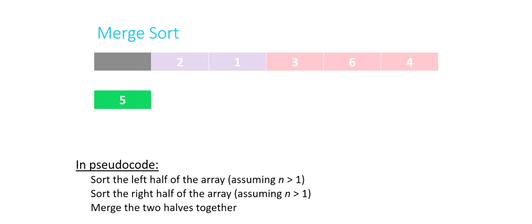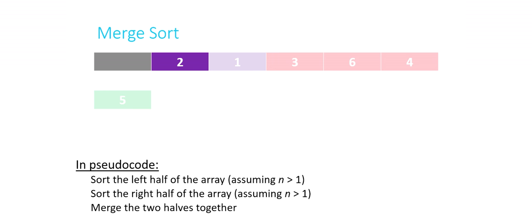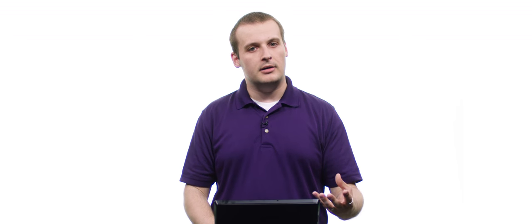Now we go back to the right half of the purple part. We sort its left half — that's two, a single element, already sorted. Then the right half — that's one, also a single element, already sorted. Now for the first time we reach step three of merge sort: we merge these two light green halves together. We compare 1 and 2, and since 1 is lower it goes first. Then 2 goes in since it's lower than nothing. So the right half of purple is now merged as 1, 2.